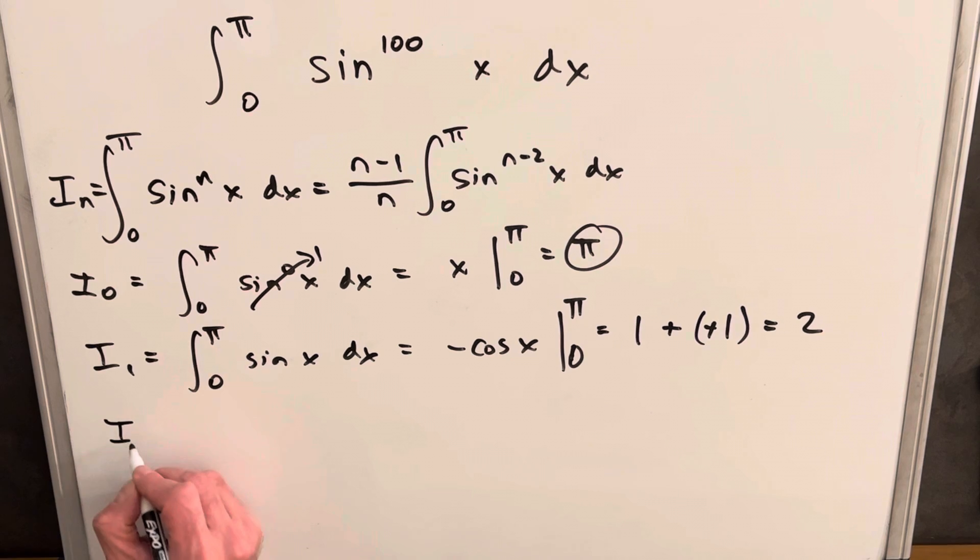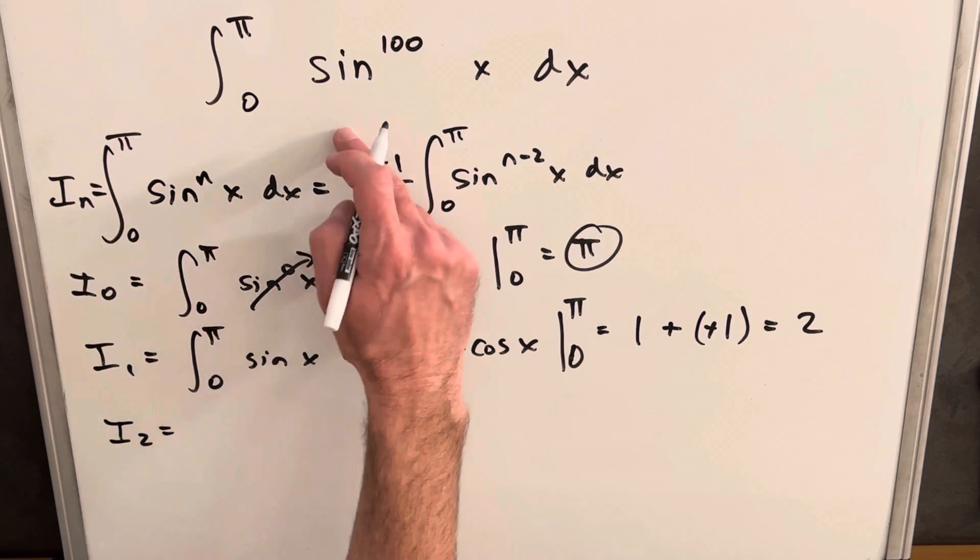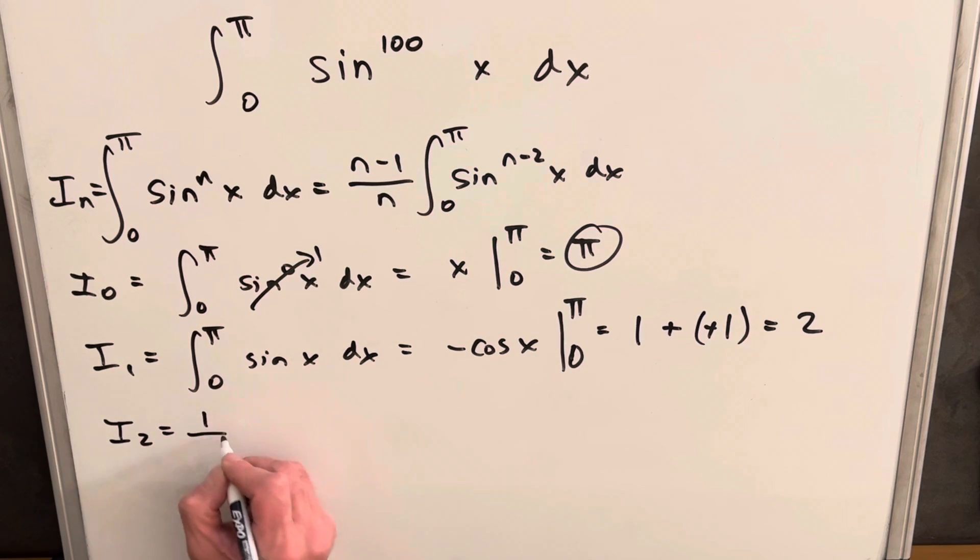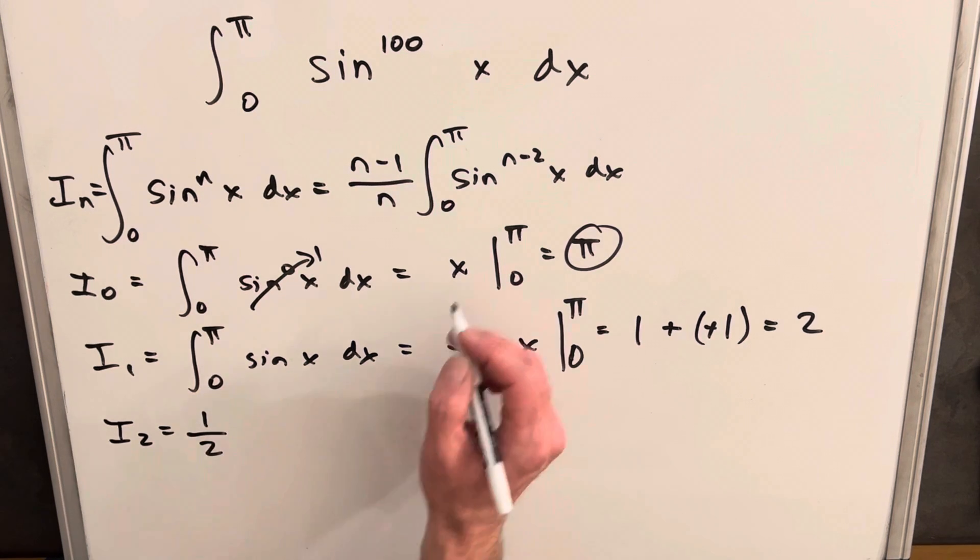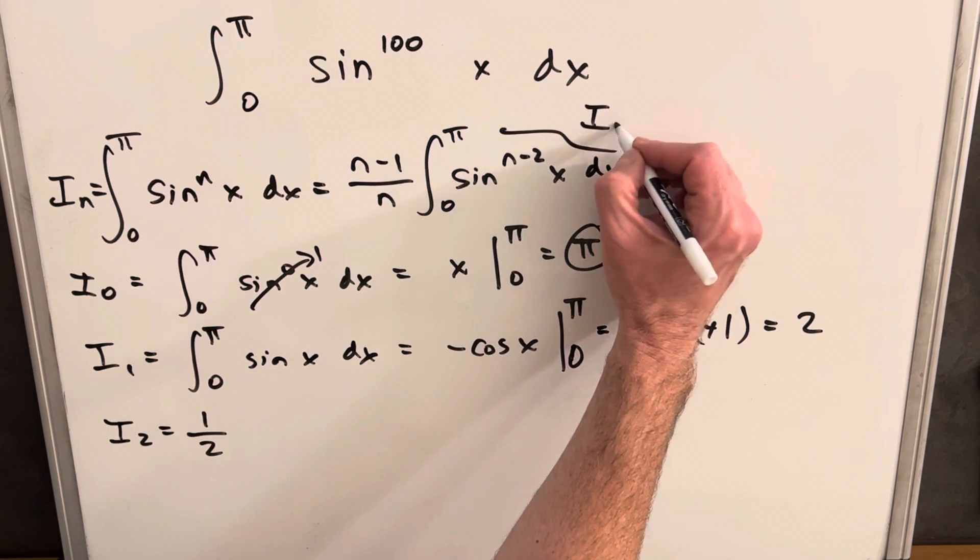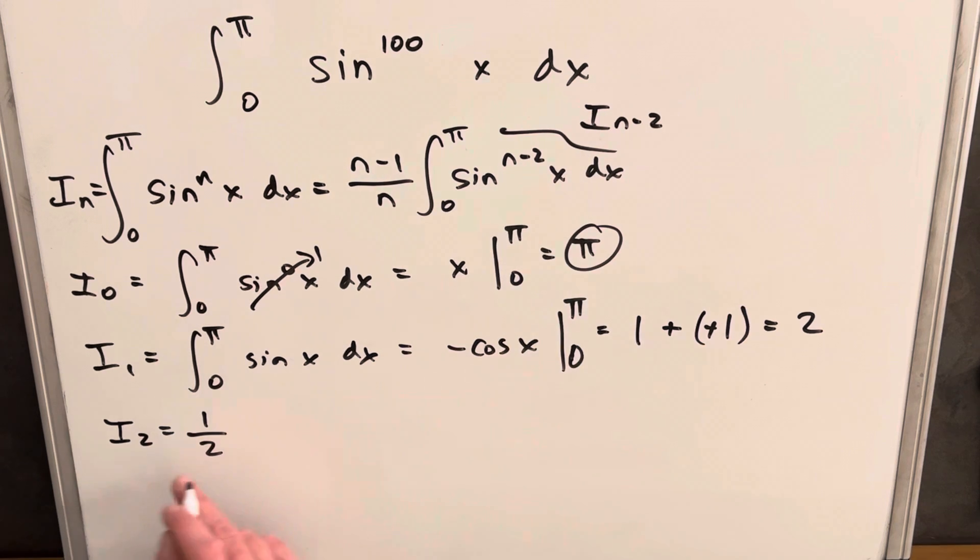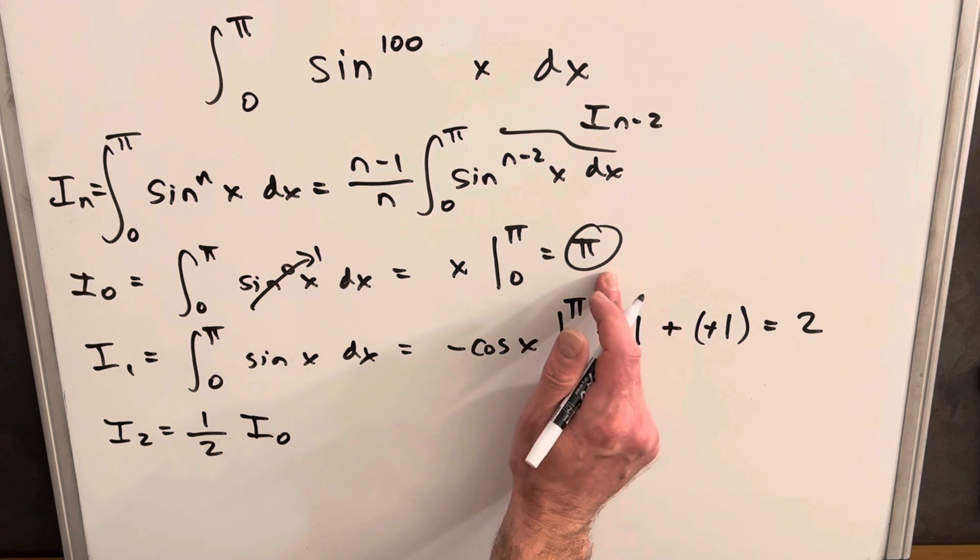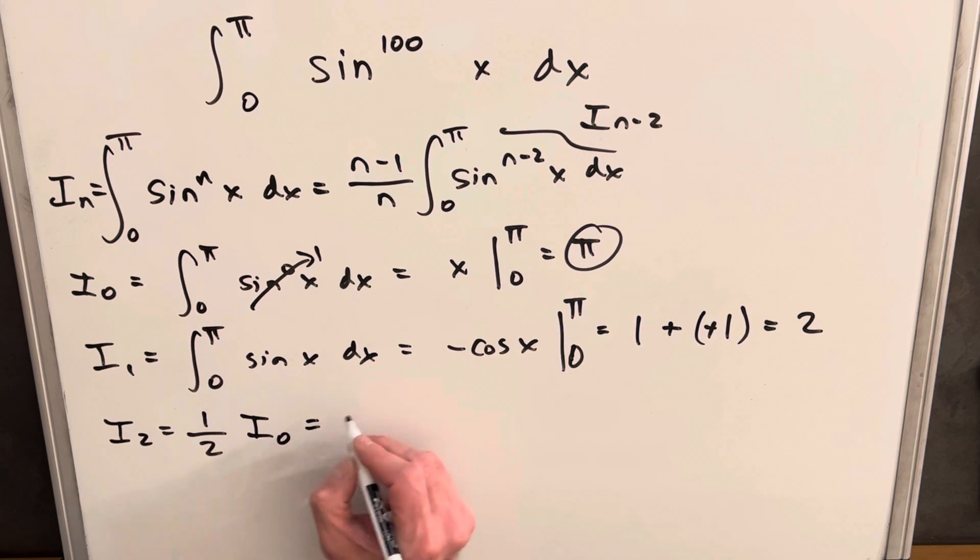Next, let's look at i sub 2. But we're going to go now back to our formula. We'll plug this in. So n minus 1, 2 minus 1 is 1 over 2. This here is going to be just i n minus 2. So i n minus 2 is going to be i sub 0. We just found i sub 0 to be pi. So this value is going to be half times pi.